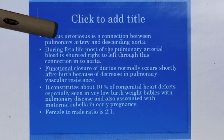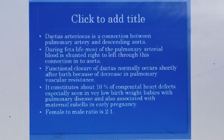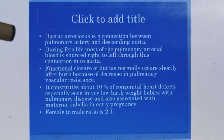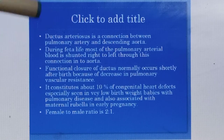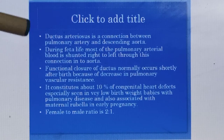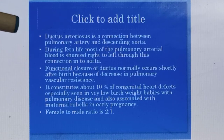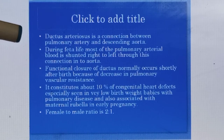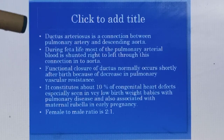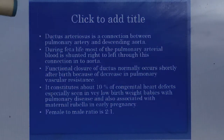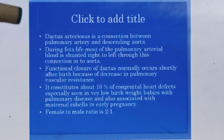So what is ductus arteriosus? It is a normal connection between the pulmonary artery and the descending aorta before birth — that is, during the antenatal period. It is a normal connection where blood from the pulmonary arteries directly enters into the aorta without passing through the non-functional lungs, as the lungs of the fetus are not fully functional before birth and become functional after birth.